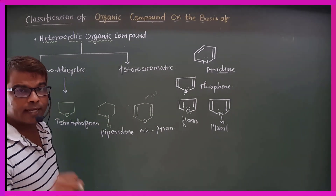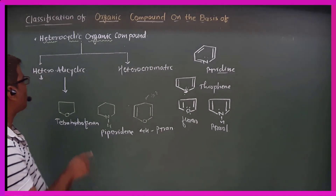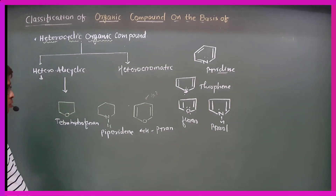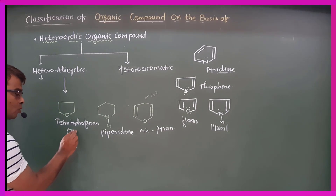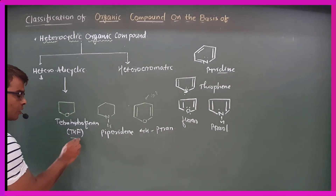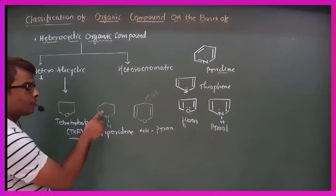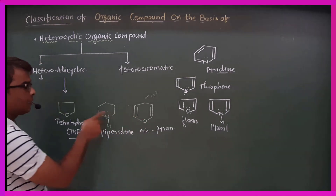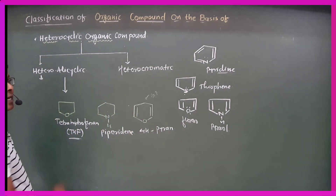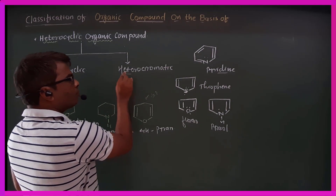Hetero-alicyclic compounds include tetrahydrofuran (THF), which is used as a solvent. Another example is 3,4-dihydropyran. These are all heteroatom-containing alicyclic compounds.